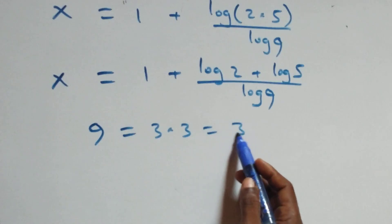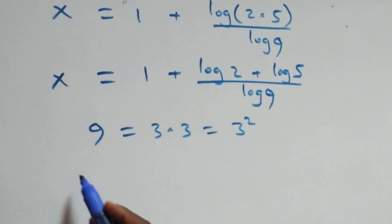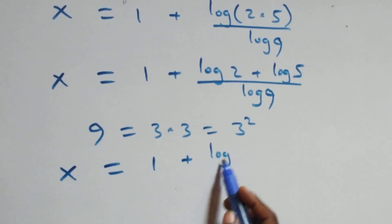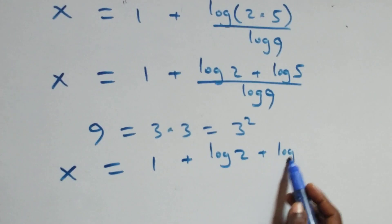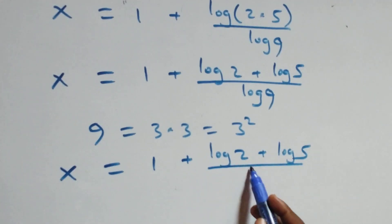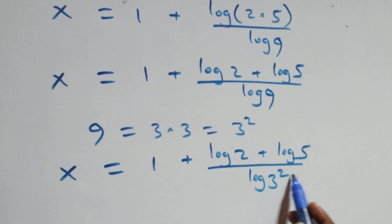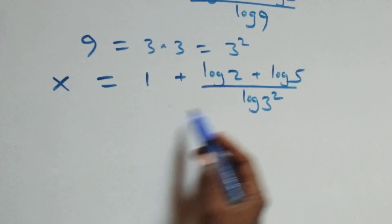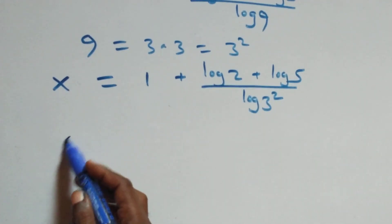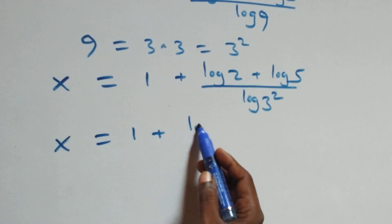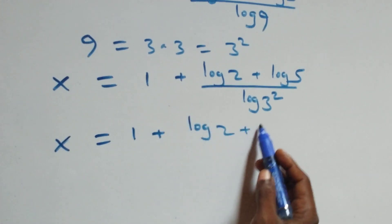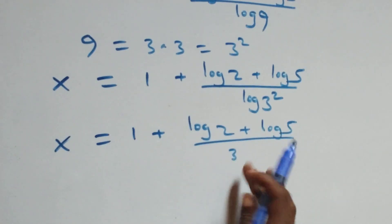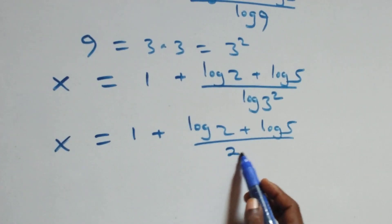Note that 9 is the same thing as 3 squared. This means x equals to 1 plus log 2 plus log 5 over log 3 squared. Applying the log of indices rule, log 3 squared becomes 2 log 3, and we have x equals to 1 plus log 2 plus log 5 over 2 log 3.